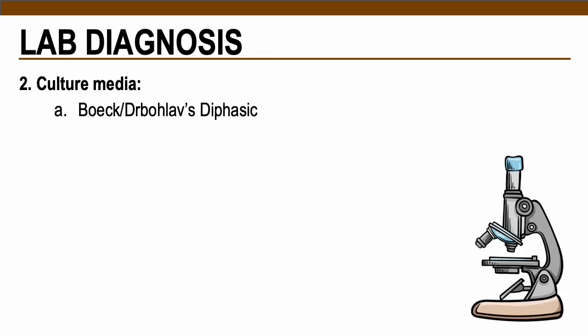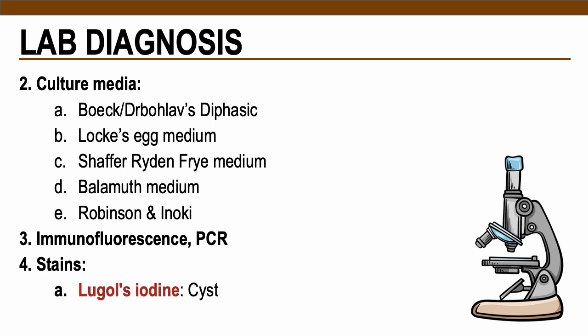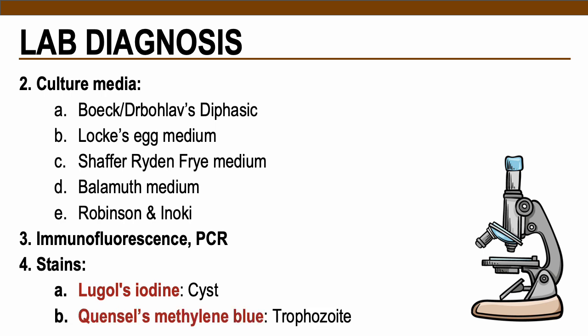Although uncommon, culture media can also be used to grow these parasites, specifically amoebas, to increase the yield of trophozoites that would otherwise disintegrate in other procedures. Culture media can increase the viability of trophozoites. Immunofluorescence and PCR can also be used, especially to differentiate pathogenic from non-pathogenic amoebas. To increase nuclear detail, cysts can be stained with Lugol's iodine, while for trophozoites, quinacrine and methylene blue are the most recommended stains.